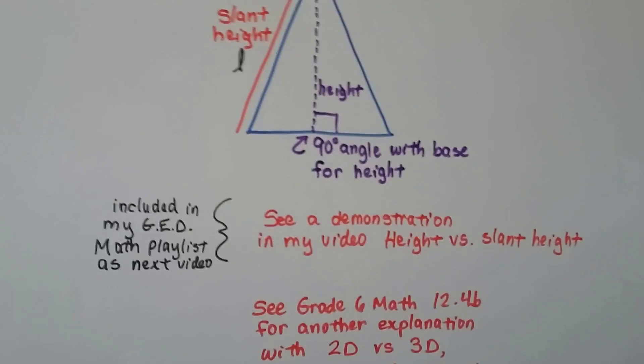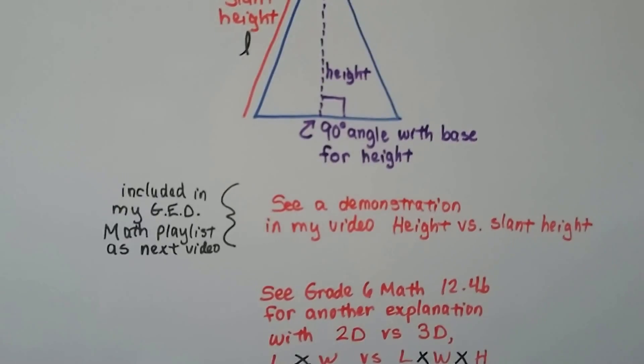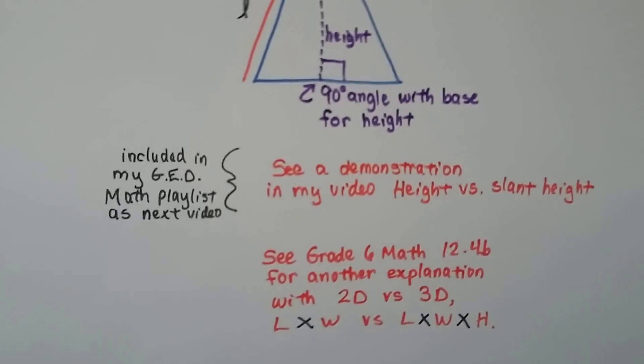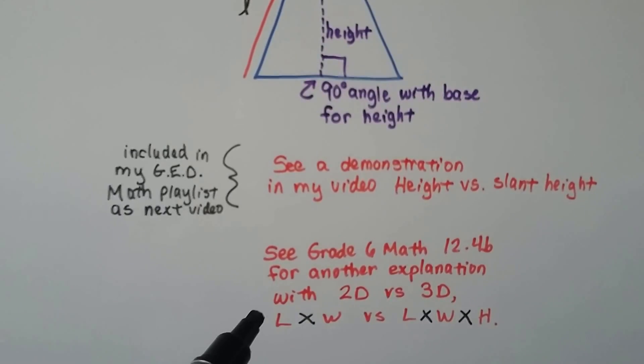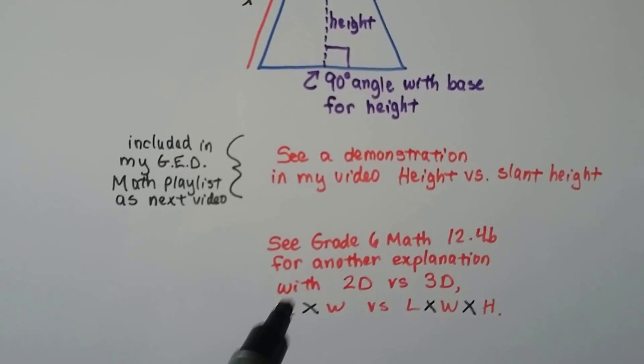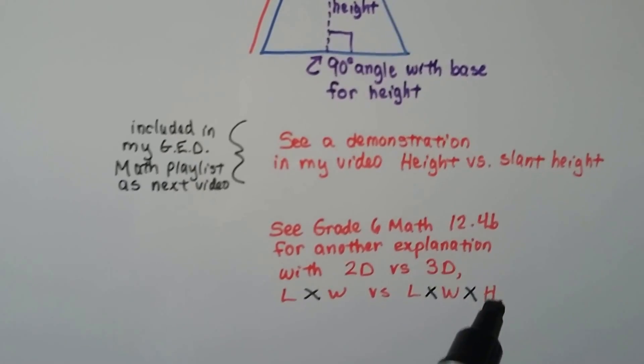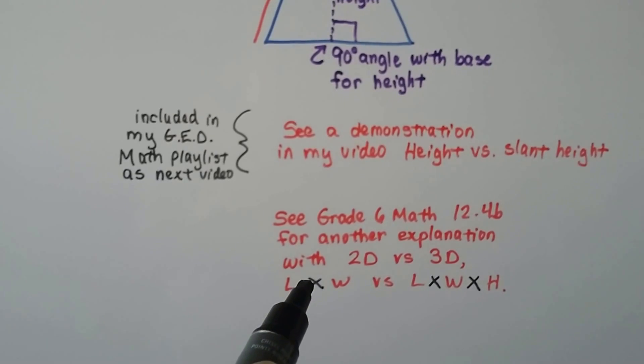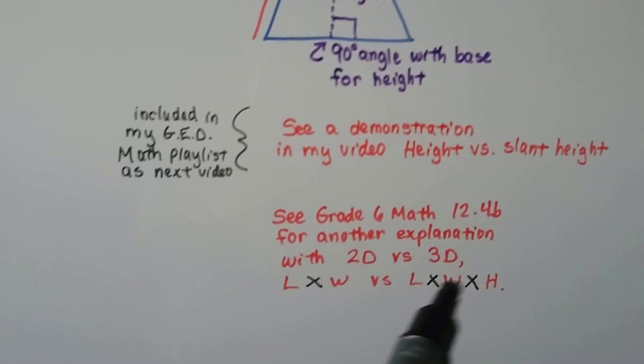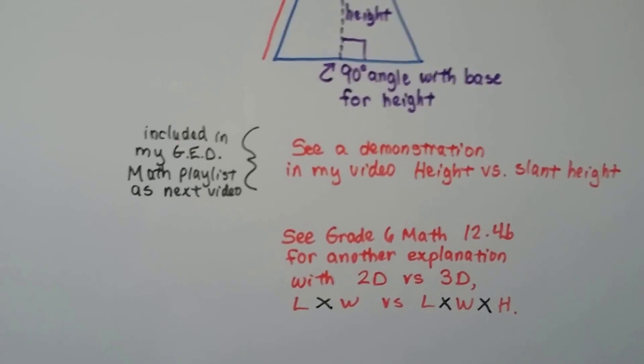I have a demonstration of height versus slant height that's going to come up next in this GED playlist. And also, I have my grade six math 12.4b for an explanation of 2D versus 3D. This is 2D because we have length times width. This is 3D because we have length times width times height. This answer would have a little two exponent because it's squared. It's two measures. This answer would have a little three exponent as cubed. I talk about that a little bit.